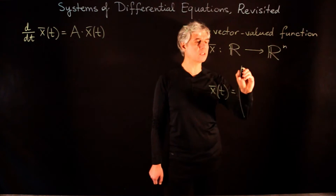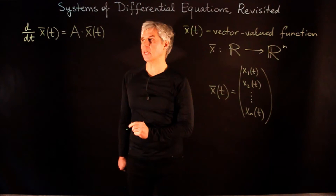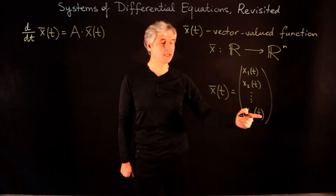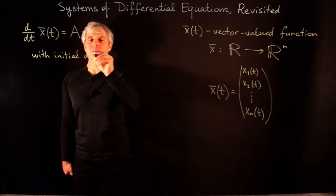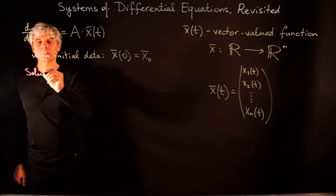So x(t) can be written as a column vector: x1(t), x2(t), …, xn(t). And A here is a square n by n matrix. In this way, we can write a system of differential equations on n unknown functions x1(t), x2(t), …, xn(t), and we will be solving this system with initial data where x(0) is given as some known vector x0.